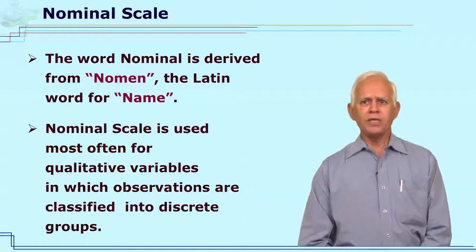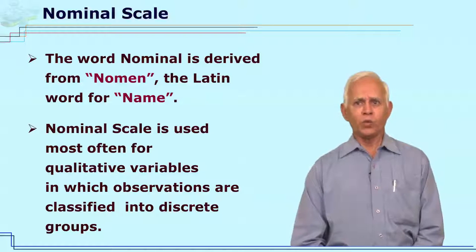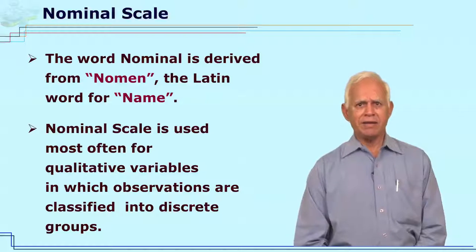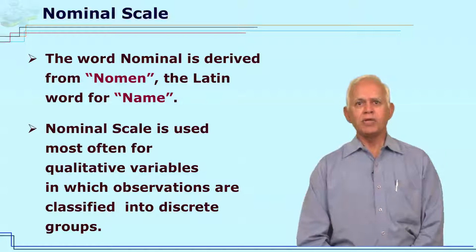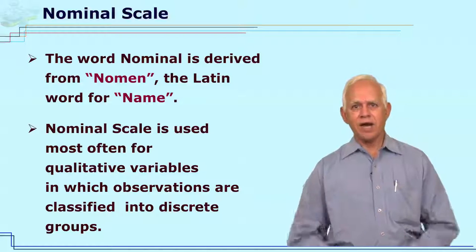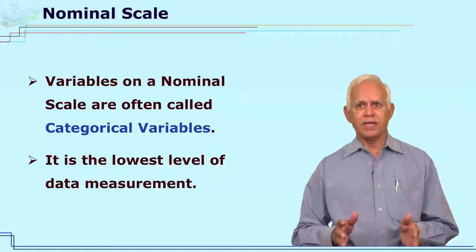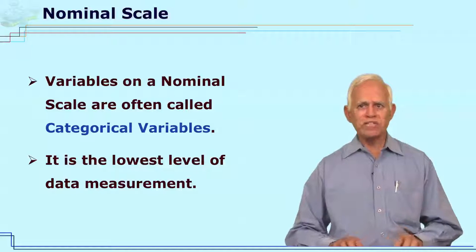This nominal word is derived from nomen, the Latin word for name. This nominal scale is basically used whenever the variables are discrete, that means they are classified into different groups. Nominal scale data are also called categorical data. The nominal scale data are basically the lowest scale data.